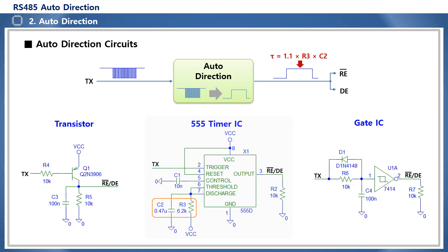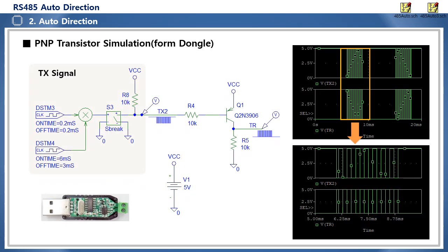In general, as the speed, that is, the BPS, increases, the length of the TX packet also becomes shorter. The gate IC circuit uses a signal inversion function, such as a gate IC 7404 inverter or a 7414 Schmitt trigger inverter. It has an operating structure that converts a high-speed data pulse into a DC value using an integration circuit with resistor R6 and capacitor C4, inverts it, and outputs a signal that maintains logic high during the TX pulse section. Diode D1 forms a fast discharge path to quickly enable the control signal to become logic low. Let's look at the operation for each method through simulation.